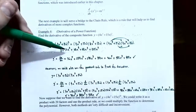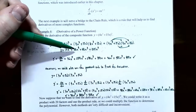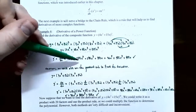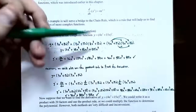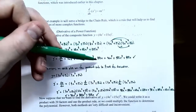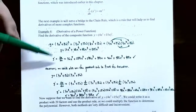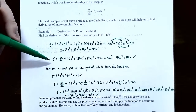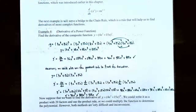Using FOIL, 4x³ times 4x³ gives 16x⁶; 4x³ times 15x gives 60x⁴; 15x times 4x³ gives another 60x⁴; and 15x times 15x gives 225x². Taking derivatives term by term and combining like terms, y′ = 96x⁵ + 480x³ + 450x.